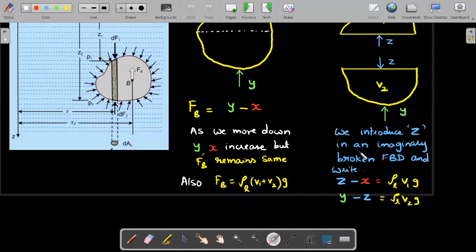So we introduce Z in an imaginary broken FBD and write the upper one Z minus X should be ρ_liquid into that upper one's volume V₁G and lower one Y minus Z. Again, the same logic of subtraction gives you the lower one's free body diagrams FBD. So you could clearly see the putting up of Z is wrong actually in the individual equations because Z never acts. But as a combination, if you add these two equations, you'll end up getting back this where the total buoyant force comes out to be ρ into V₁ plus V₂ into G.